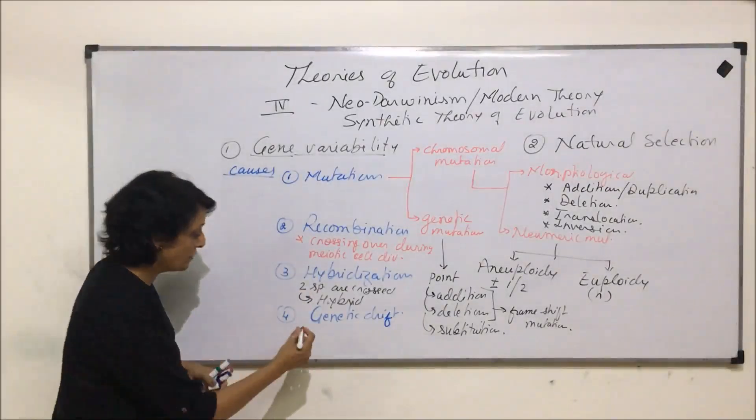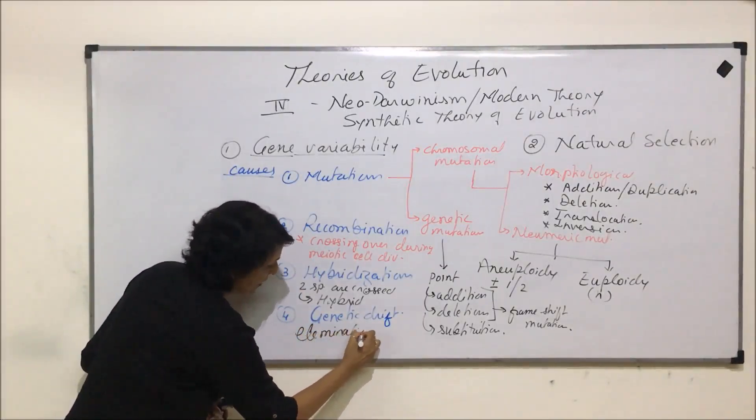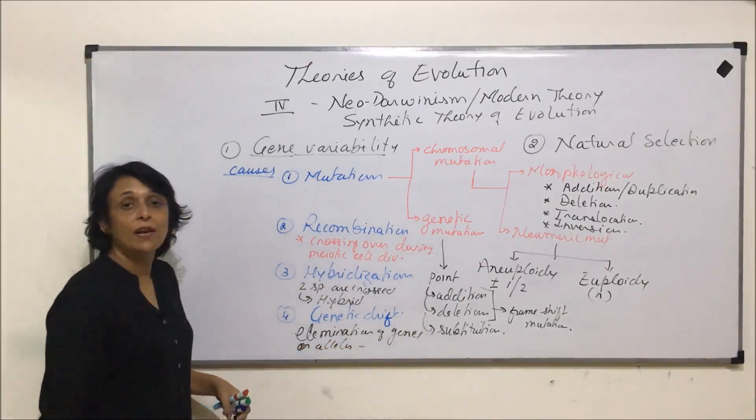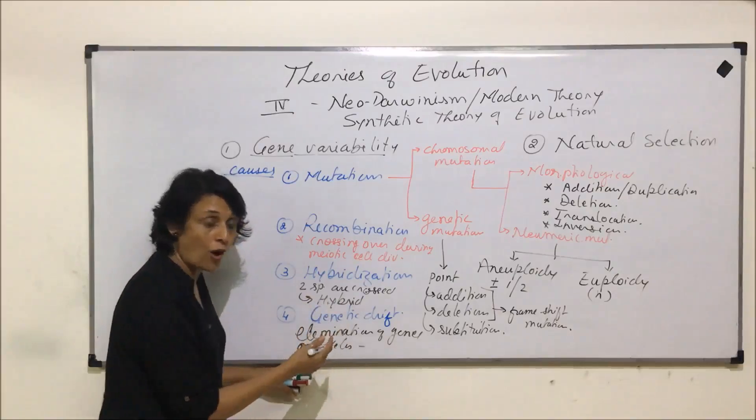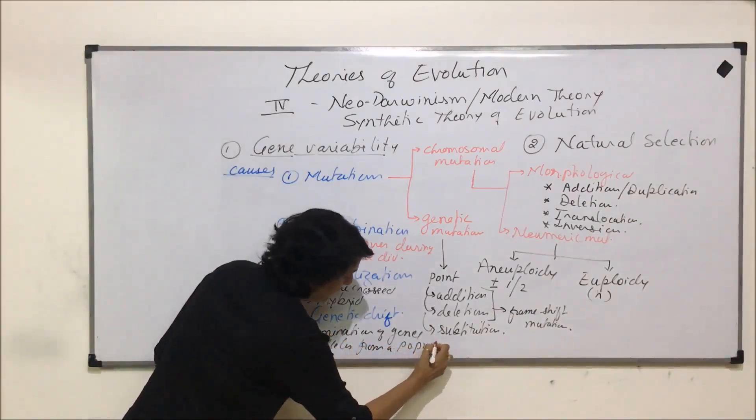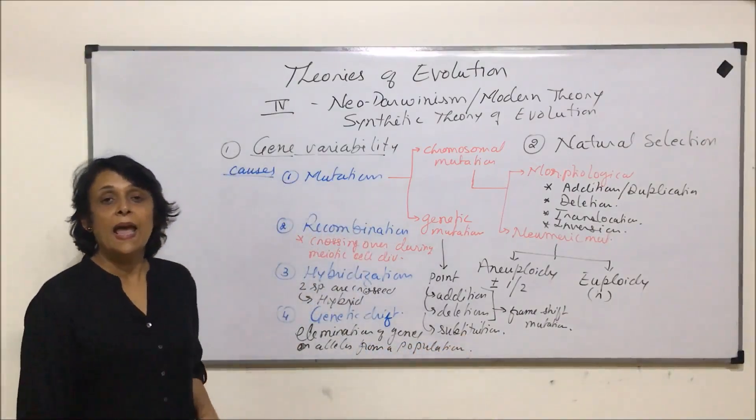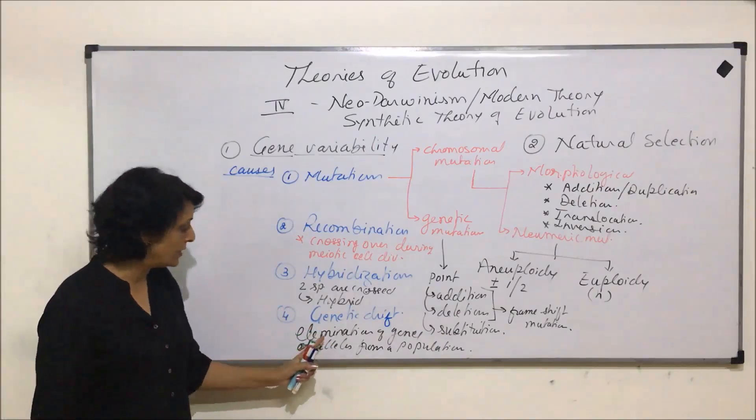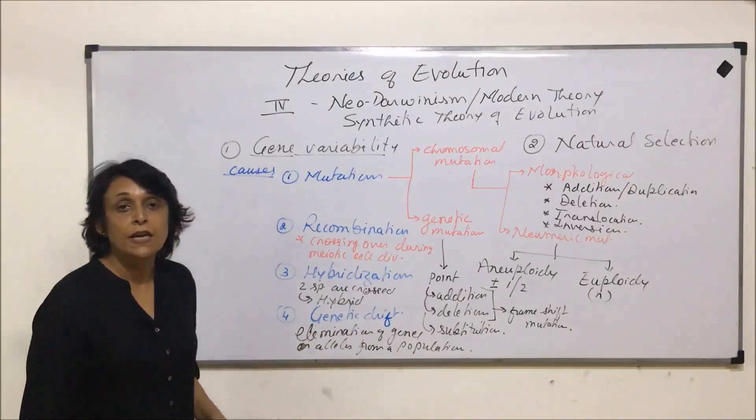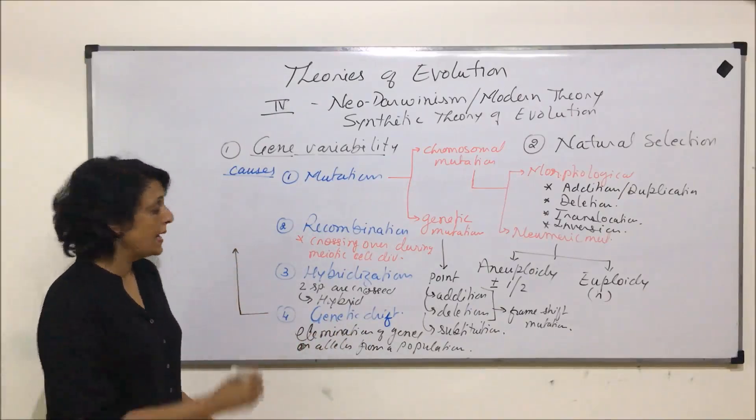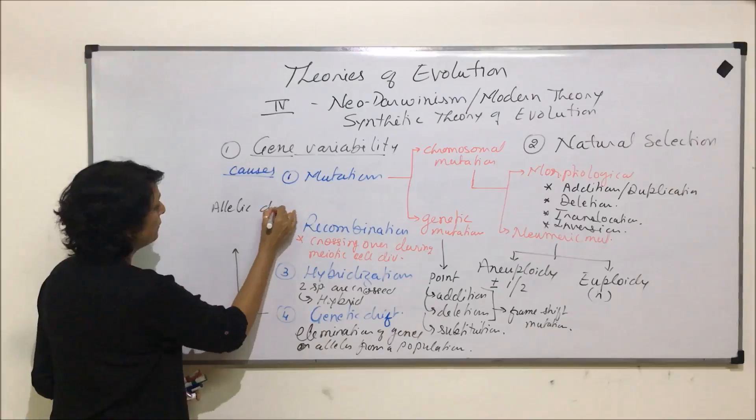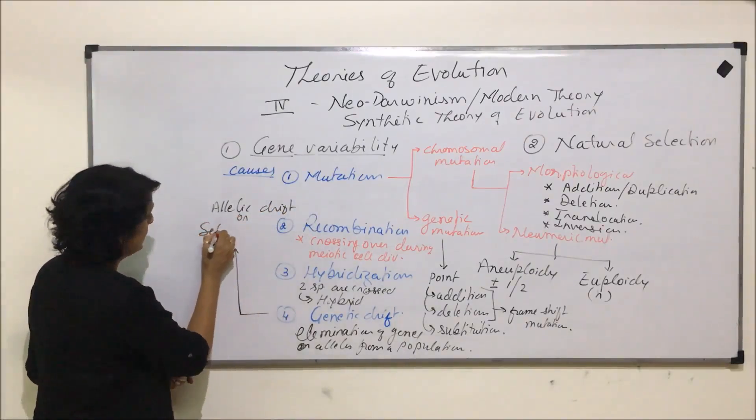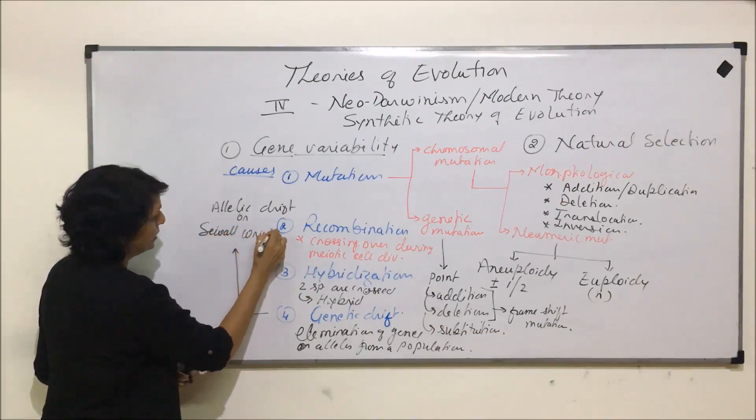The fourth is genetic drift, which means elimination of genes or alleles from a population. That means these genes or alleles can be lost from a population due to any reason. That reason could be an epidemic or a disease, because of which these genes get eliminated from that particular population. Then that situation is called genetic drift. Genetic drift is also given two terms: it is also known as allelic drift, or it is also termed on the basis of a scientist's name, Sewall Wright effect.